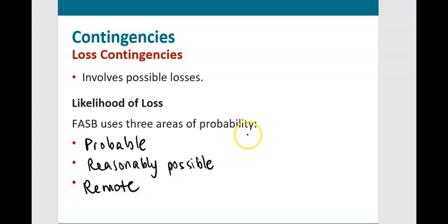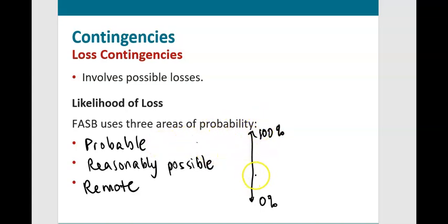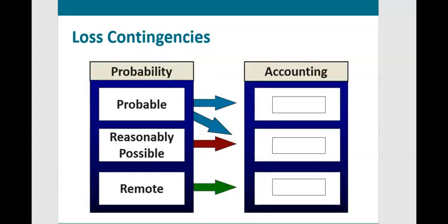There's a scale of likelihood between about 0% and about 100% — although 100% would not be a contingency. Probable is somewhere at the top of that scale, and where exactly you draw the line is up to management to determine.